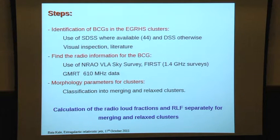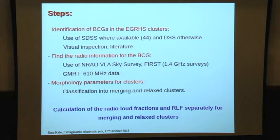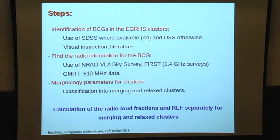This work is based on data available from other motivations. We used SDSS and DSS to identify the brightest cluster galaxies in this sample, along with visual inspection of optical images and literature. We looked for radio information for the BCGs using all-sky radio catalogs and GMRT data acquired in the context of the radio survey of these clusters. Then we used morphology parameters from Chandra X-ray maps to classify clusters into merging and relaxed, and found the radio loud fractions and radio luminosity function separately for each category.